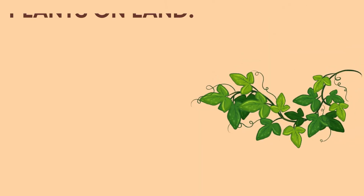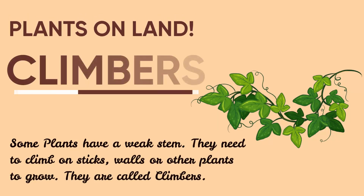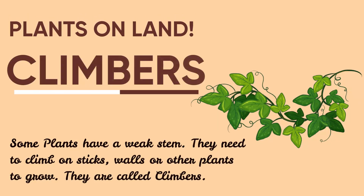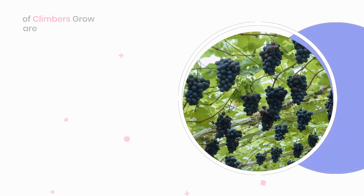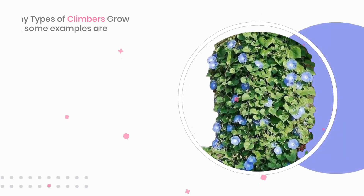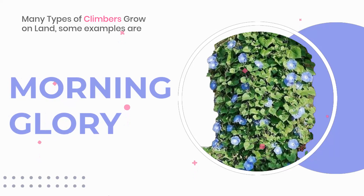Some plants have a weak stem. They need to climb on sticks, walls or other plants to grow. They are called climbers. Some examples are grapevine, muskmelon, morning glory.